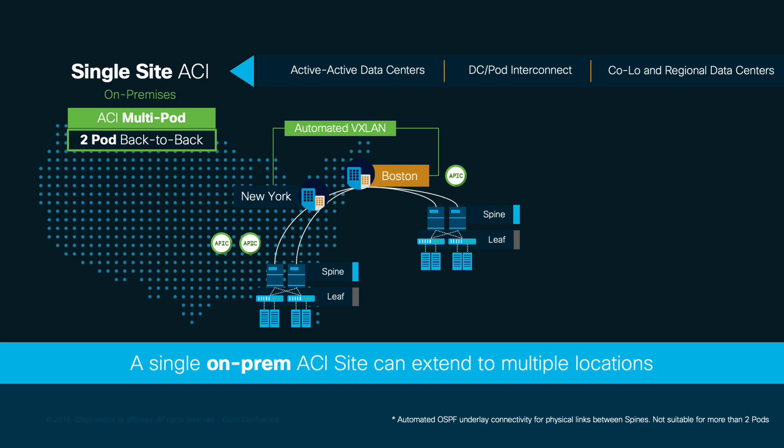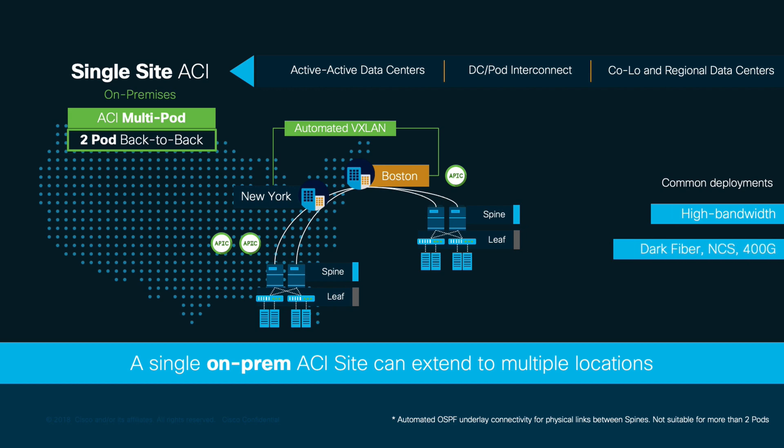This is commonly used in scenarios where you may need high-bandwidth connections, such as 100GB or 400GB, between isolated rooms, or where you already have a dark fiber, optic transport, or NCS installations between locations.